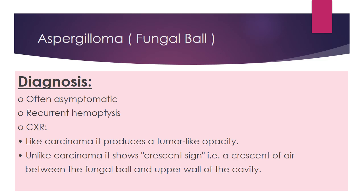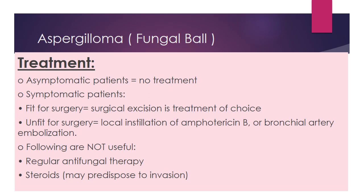It is often asymptomatic; however, it can present with recurrent haemoptysis. The chest X-ray shows carcinoma-like features producing a tumour-like opacity. Unlike carcinoma, it shows a crescent sign — a crescent of air between the fungal ball and the upper wall of the cavity — which is not seen in carcinoma. The fungal ball is typically seen in the upper lobes.